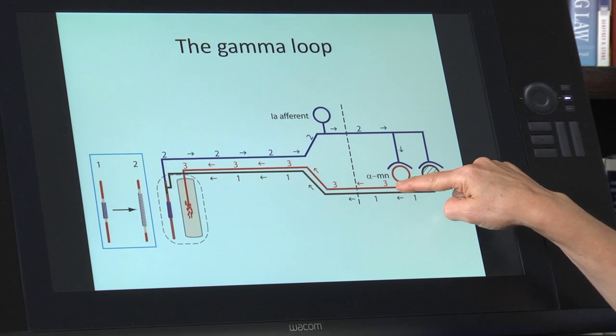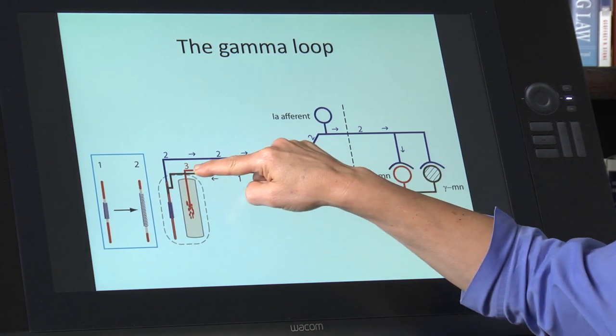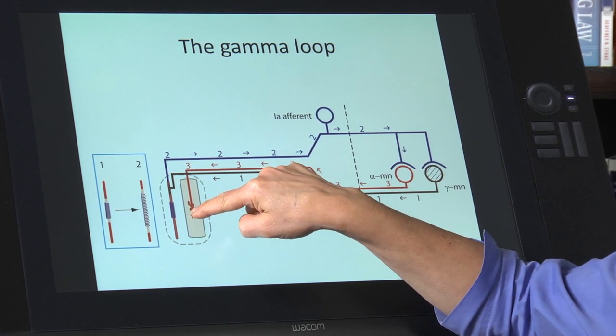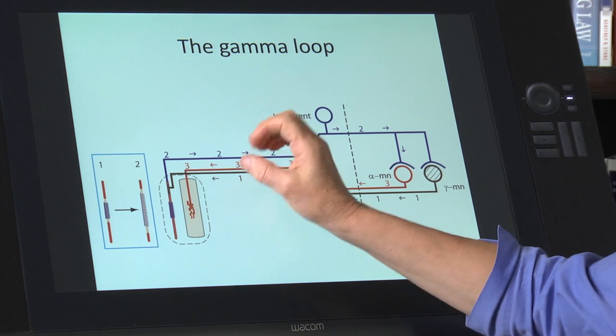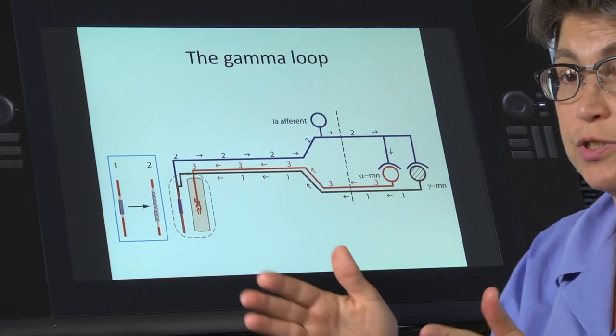Then the alpha motor neuron is excited and sends action potentials back out to the extrafusal fiber of the homonymous and synergist muscles, and so now you have this contraction that opposes the stretch.